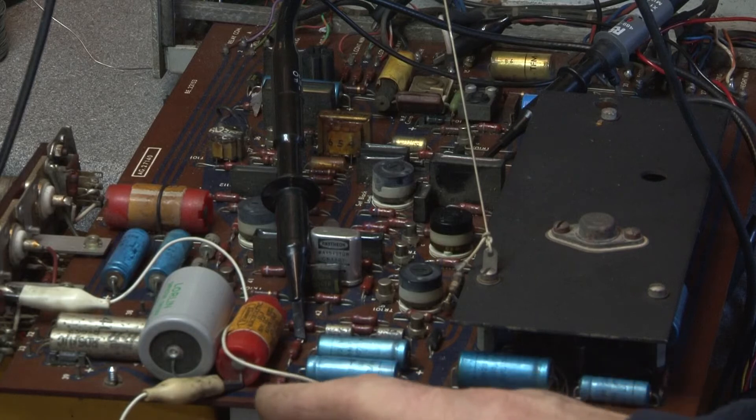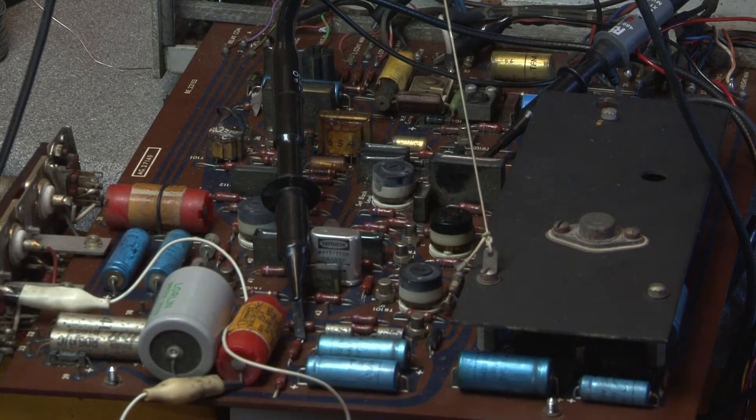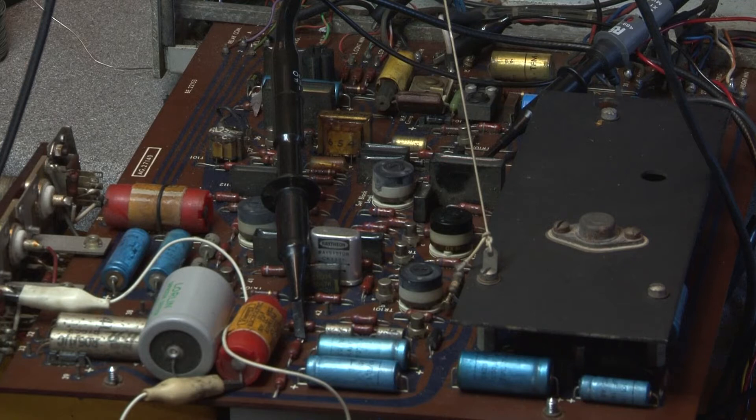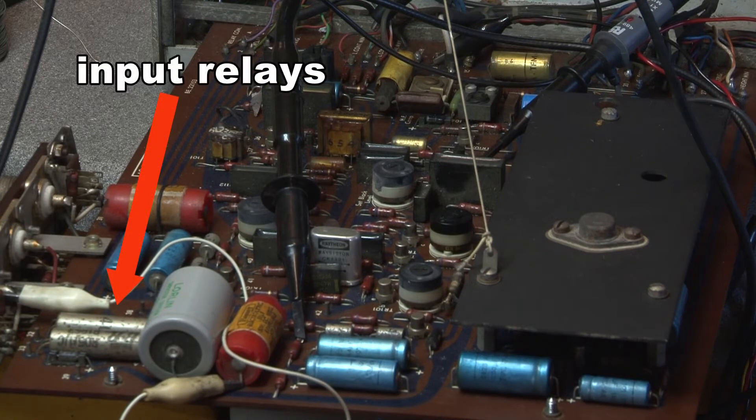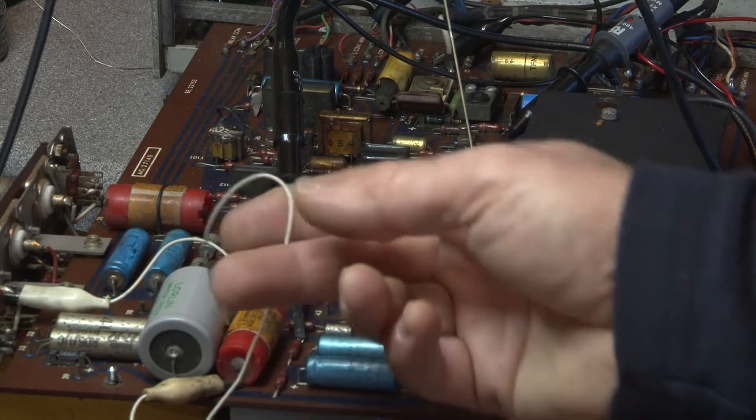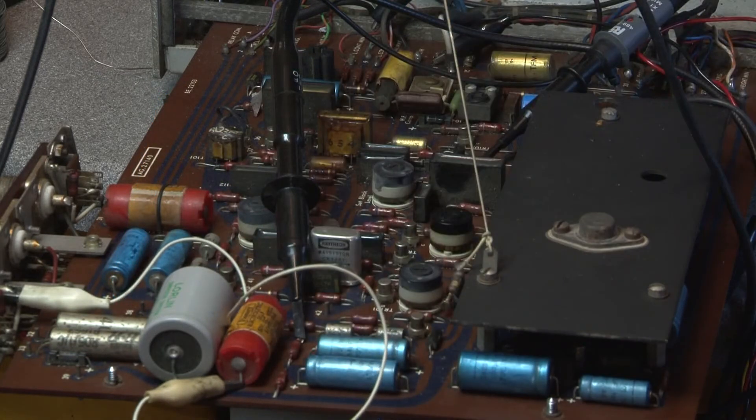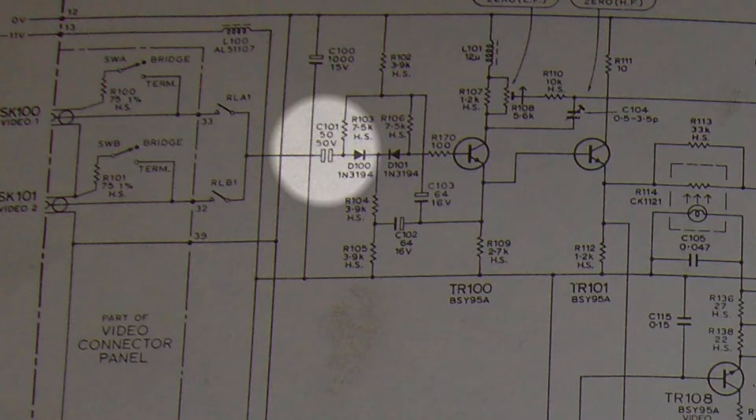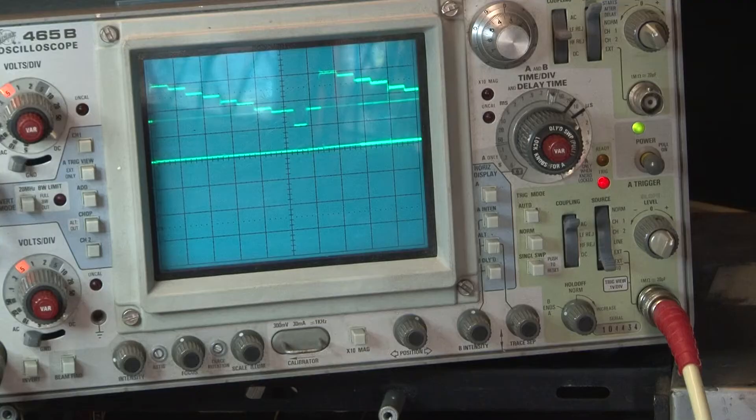So here we're injecting our test signal onto the board. The relays that select between input 1 and input 2 are actually driven from a voltage that's coming from off this board so there's just a jumper wire to feed the test signal straight onto the board directly into C101 and that's what's showing on the top trace of the scope.